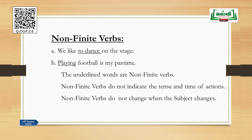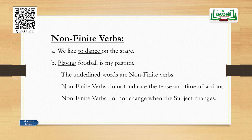Now, non-finite verbs. Verbs are of two types: finite verbs and non-finite verbs. How do you identify a non-finite verb? Look at sentence A: 'We like to dance on the stage.' The finite verb here is 'like' — it shows present tense clearly. What about 'to dance'? It does not show any tense or time of action. So 'to dance' is a non-finite verb. Rule number one: non-finite verbs do not indicate tense and time of action.